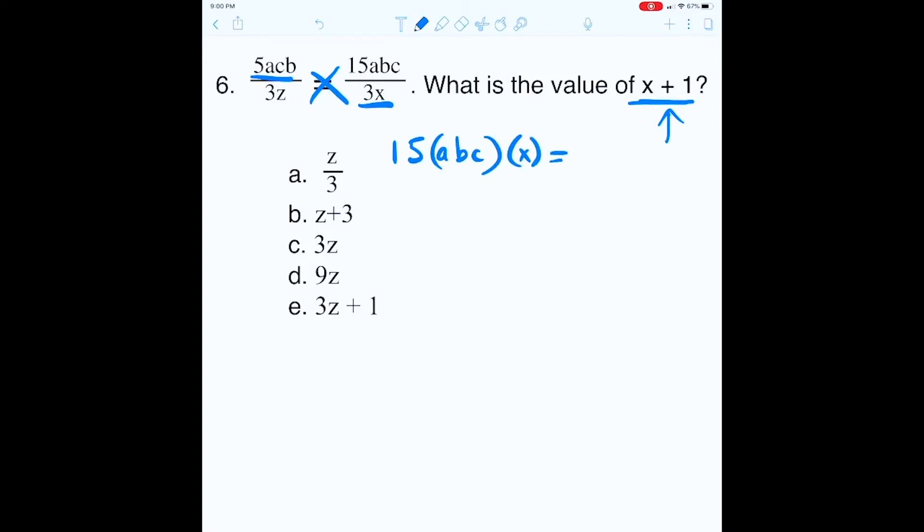And then we're going to cross multiply 3z and 15ABC. So I'm just going to keep those as is. 3z, okay, times 15ABC.